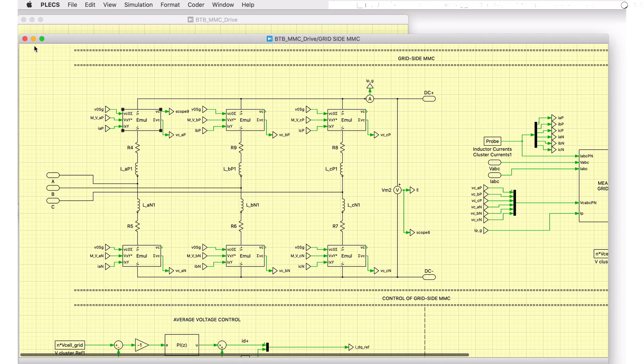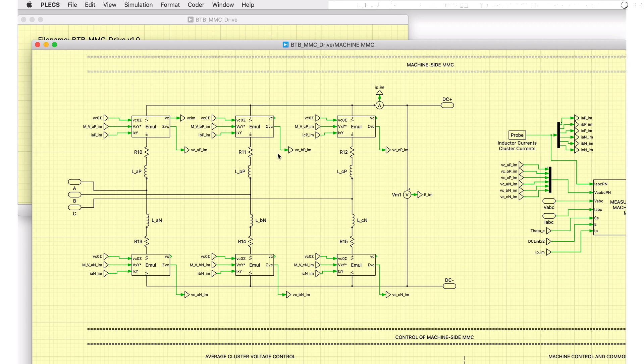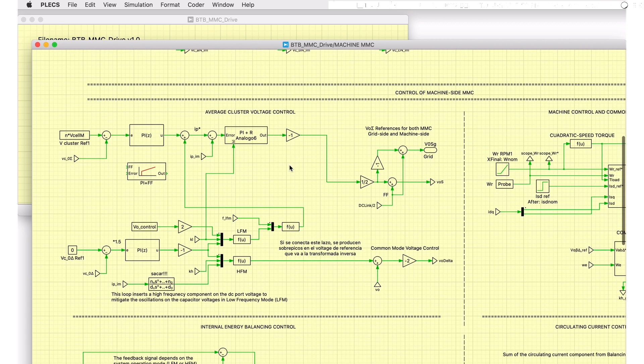Next, let's look at the machine-side MMC subsystem. The converter and control system is similar to the grid-side MMC. The average voltage control of the machine-side MMC, in addition to providing the average cluster voltage references, ensures a proper operation of the back-to-back MMC configuration by providing a dynamic DC port voltage reference.